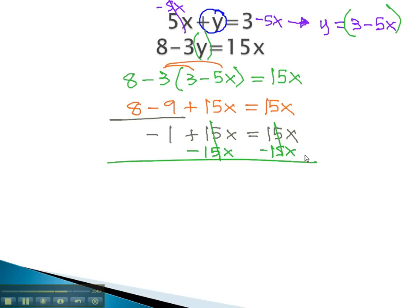As we do, we notice the variable subtracts out completely. We're left with negative 1 on the left side of the equation, and nothing, or 0, on the right side. We end up with the equation negative 1 equals 0, but we know this is not true. This is false. Negative 1 never equals 0.